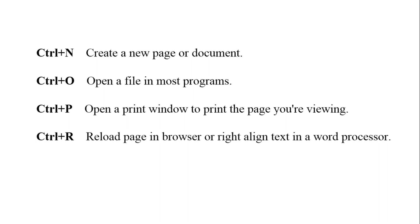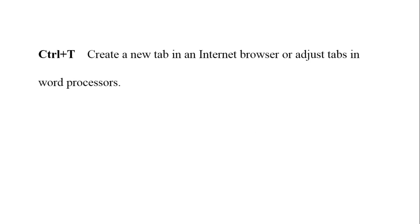The next one is ctrl plus R, which reloads the page in a browser or right-aligns text in a word processor. Then ctrl plus S — everyone knows this — it is used to save the document or file. The next is ctrl plus T, used to create a new tab in an internet browser or adjust tabs in a word processor.